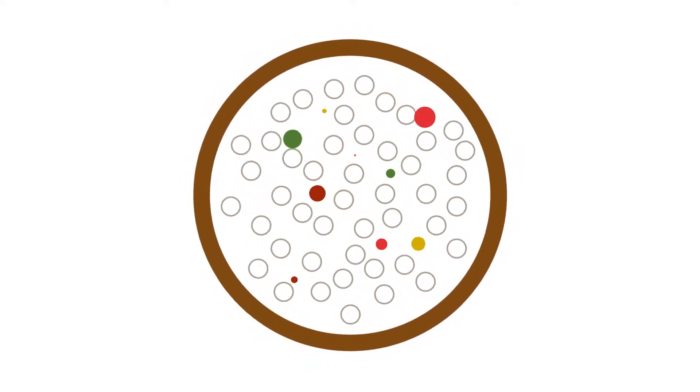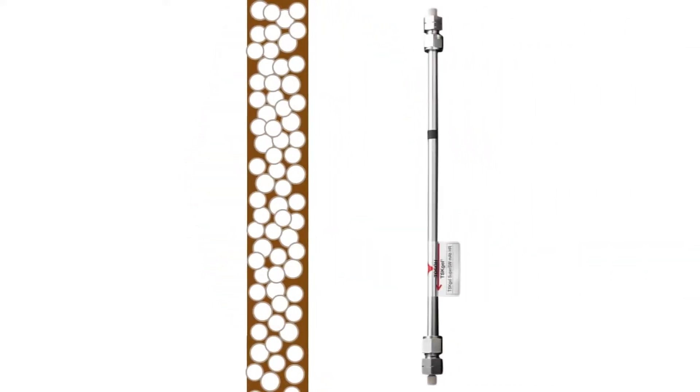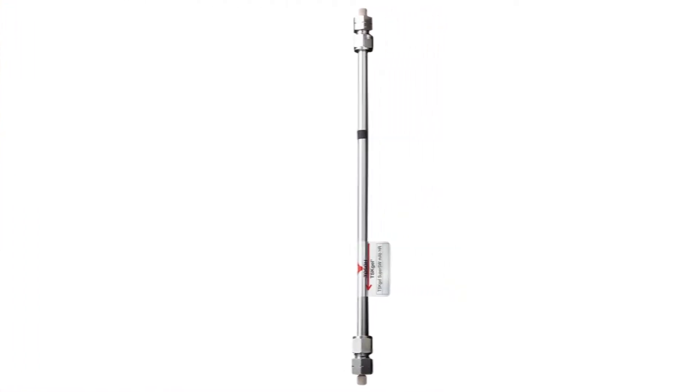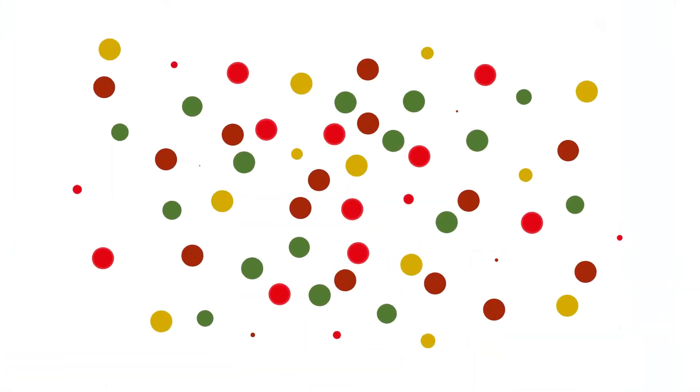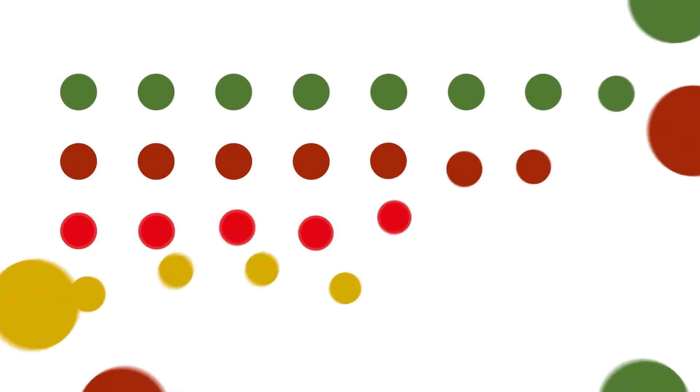And this is how these columns look like in real life. Small columns for analysis. Larger ones for production. Impressive. But, the result is always the same. You can pick out specific molecules from a lot of different products.